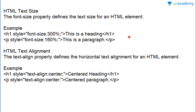p style equals to font-size 160% — this is a paragraph. The difference is: 300% means the text will be three times bigger than the normal font size, and 160% means 1.6 times bigger. You can try these in your own notepad and see how the difference is created.